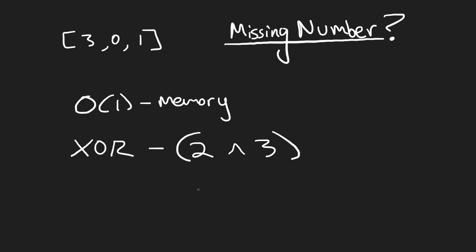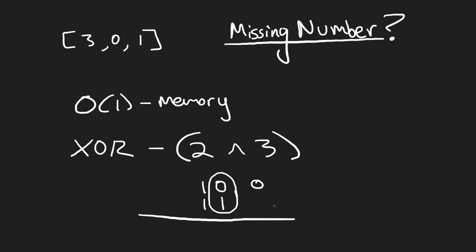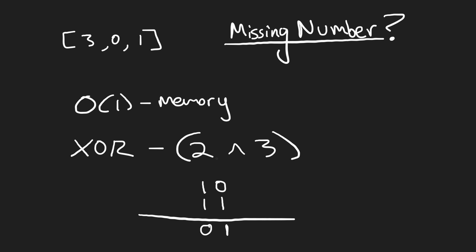How do you exclusive or? You look at each bit — if only one of them is a 1 (i.e., they're different), the output is 1. If they're the same — both 1 or both 0 — the output is 0. So taking 2 (binary 10) XOR 3 (binary 11): the first bits are both 1, giving 0; the second bits are 1 and 0, giving 1. The result is 1.